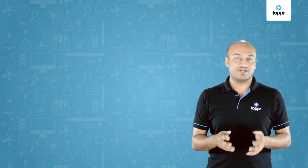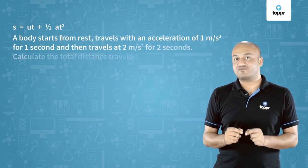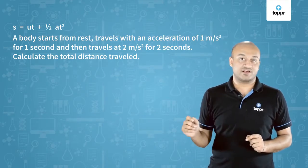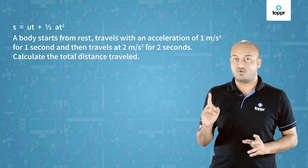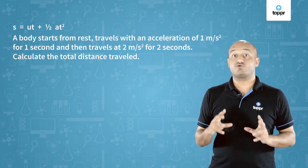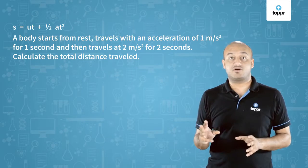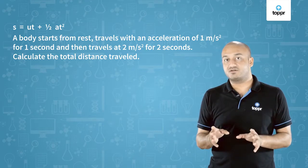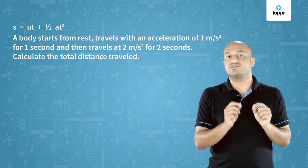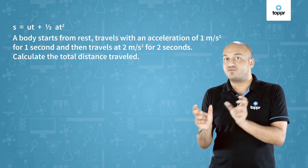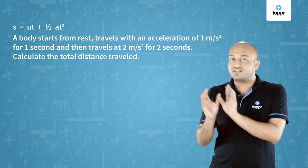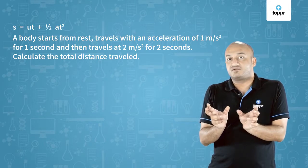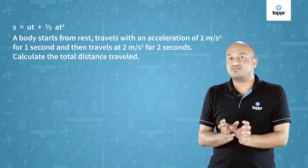Now let's solve a question using our second equation of motion, which is S equals UT plus half AT². A body starts from rest, accelerating at 1 meter per second squared for a time period of 1 second, and then it accelerates at 2 meters per second squared for a time period of 2 seconds. What is the total distance traveled? Since the acceleration is changing but constant for each time period, we can look at this as two different questions and add the individual distances to get the total distance.